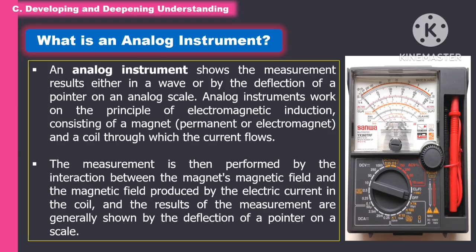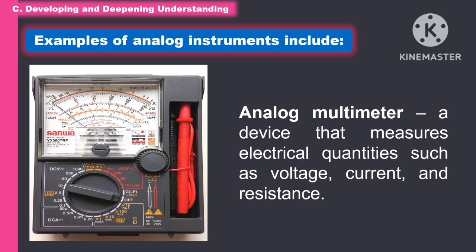What is an analog instrument? An analog instrument shows the measurement result either in a wave or by the deflection of the pointer on the analog scale. Analog instruments work on the principle of electromagnetic induction, consisting of a magnet — permanent or electromagnet — and a coil through which current flows. The measurement is performed by the interaction between the magnetic field and the field produced by the electric current in the coil, with results shown by the deflection of a pointer on the scale.